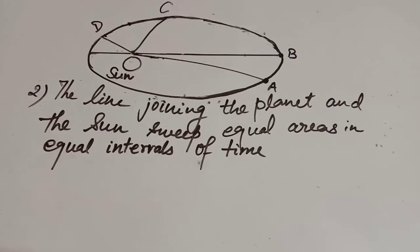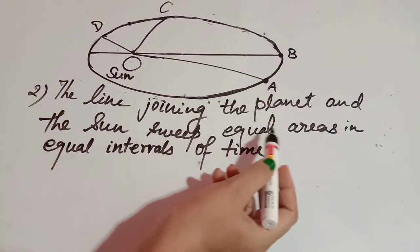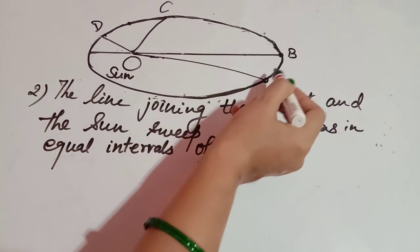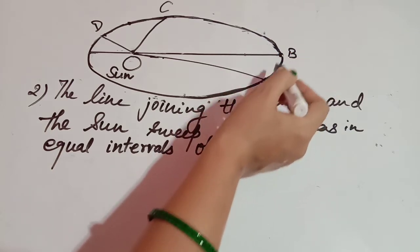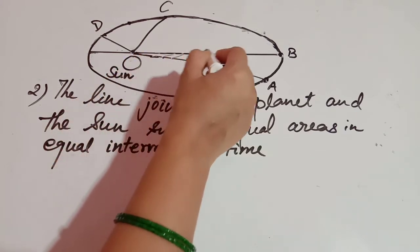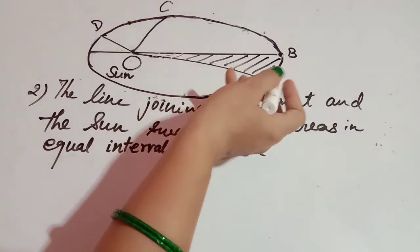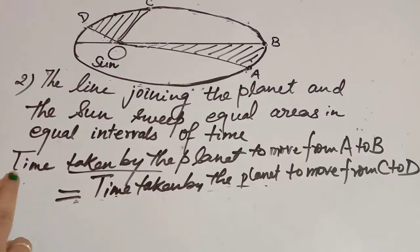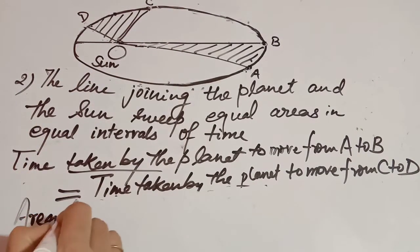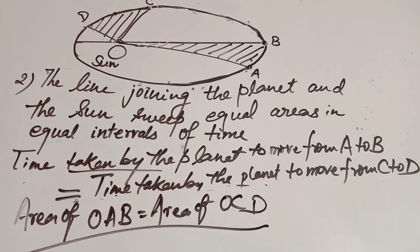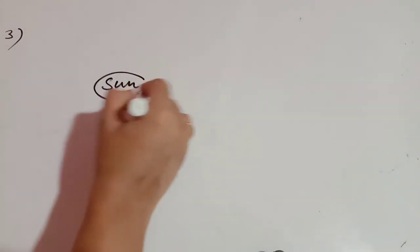The second law states: the line joining the planet and the Sun sweeps equal areas in equal intervals of time. In the picture, the Sun is at one position and the planet moves from A to B in one month, sweeping area OAB. If the planet also takes one month to move from C to D, it sweeps area OCD. The area of OAB equals the area of OCD.